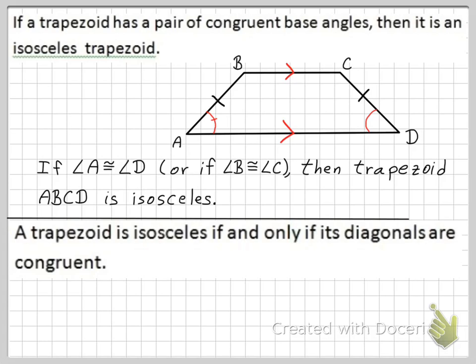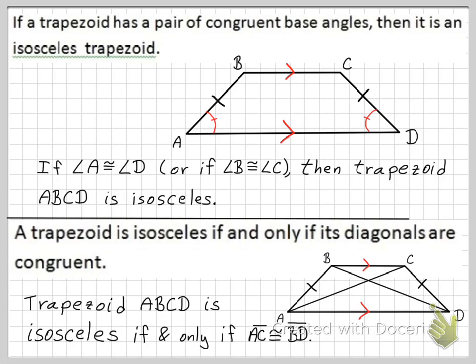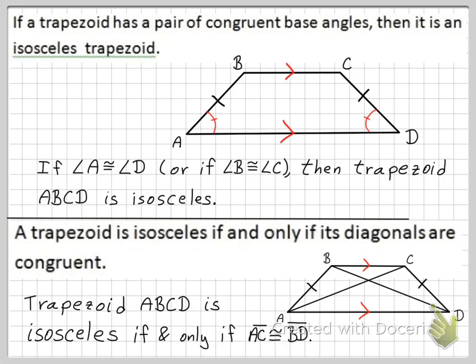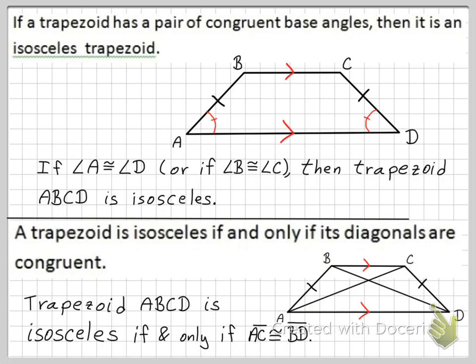The next theorem: a trapezoid is isosceles if and only if its diagonals are congruent. In trapezoid ABCD, it is isosceles if and only if diagonal AC is congruent with diagonal BD. If they're congruent, then the trapezoid must be an isosceles trapezoid — the legs would then equal each other.